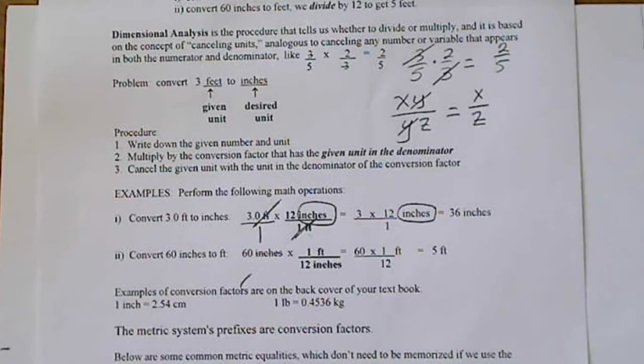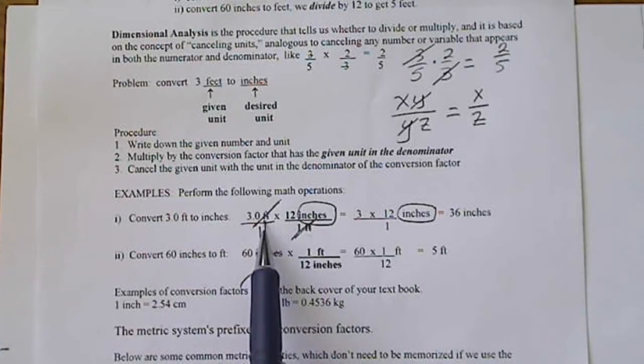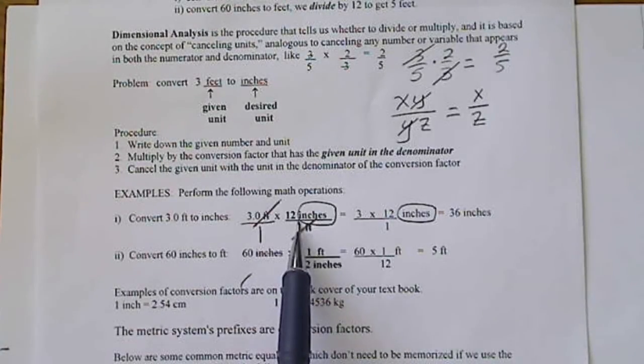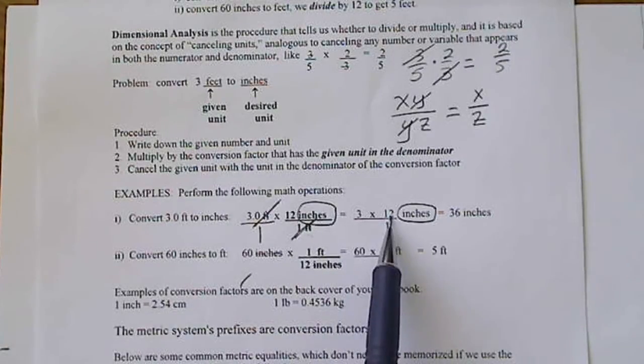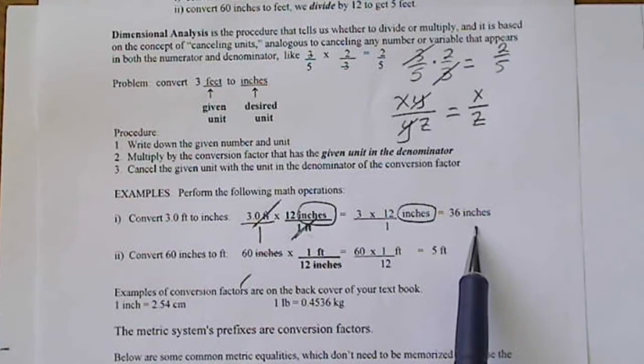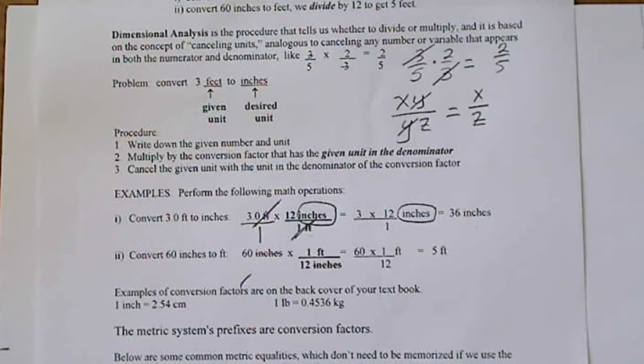Inches is the unit that did not cancel, so inches would be left as part of the answer. Since we have 3 in a numerator and 12 in a numerator, our answer is going to be 3 times 12 or 36 inches. We know that we would multiply by 3 instead of dividing by 3 because we know that inches are smaller units and that feet are larger units.